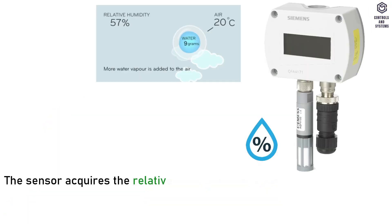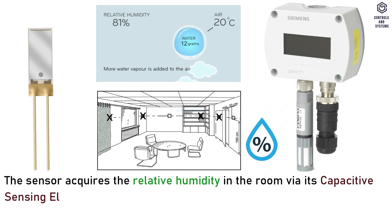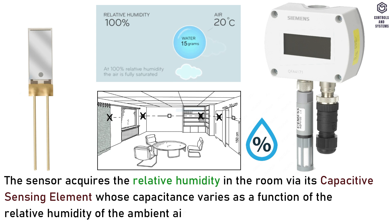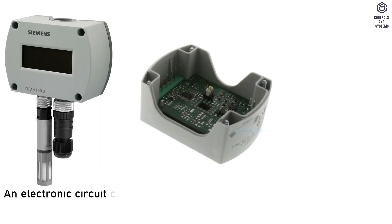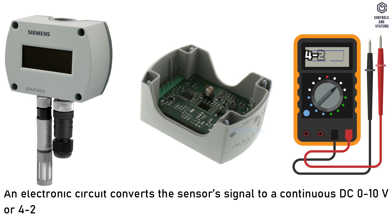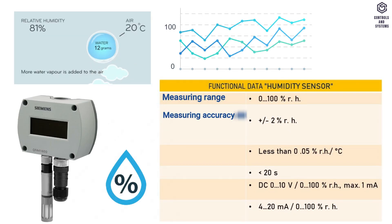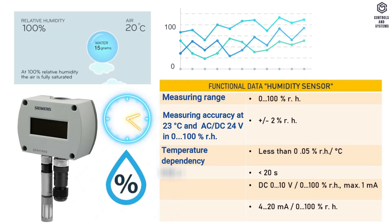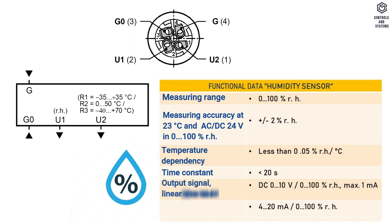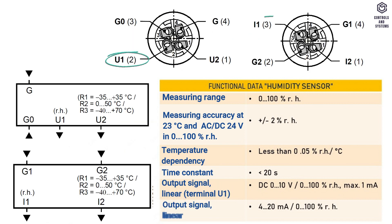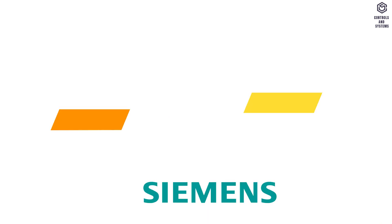Relative humidity. The sensor acquires the relative humidity in the room via its capacitive sensing element, whose capacitance varies as a function of the relative humidity of the ambient air. An electronic circuit converts the sensor's signal to a continuous DC 0 to 10 volt or 4 to 20 milliamps signal, corresponding to a relative humidity of 0 to 100%. Measuring range, measuring accuracy, temperature dependency, time constant and linear output signal for terminal U1 and terminal I1. This table indicates the specification of functional data for humidity sensor.